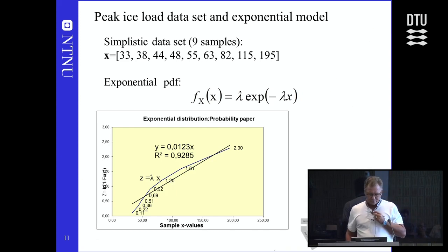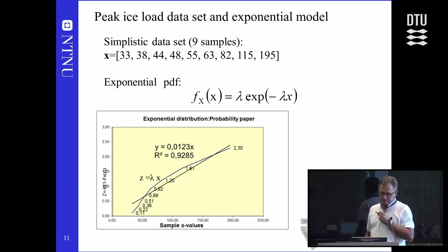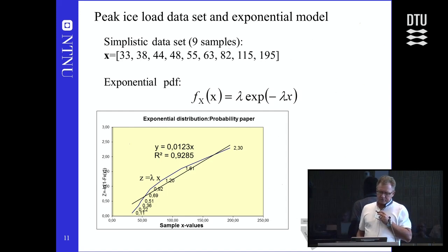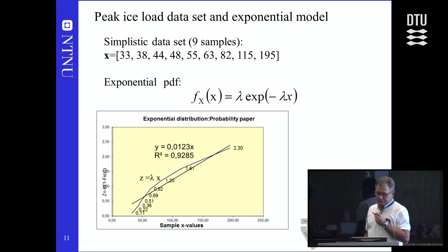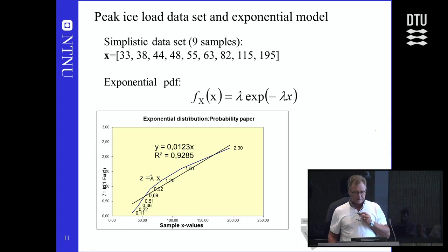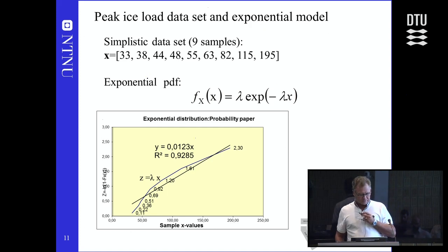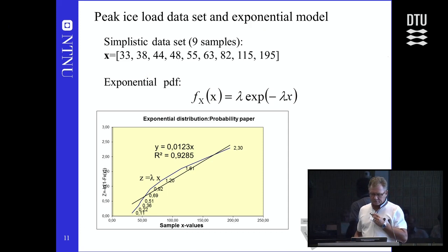On exponential probability paper, a straight line is fitted to the data with a slope of 0.0123, giving lambda equal to 0.0123 from regression parameter estimation. We see the lower part has a high slope and the upper part a smaller slope, so clearly the data does not fit well to the upper part of the exponential model, nor perfectly to the lower part.